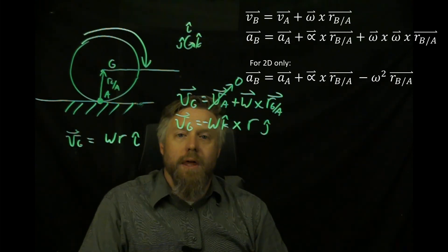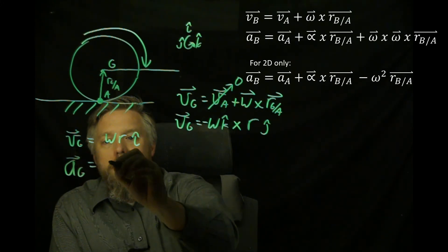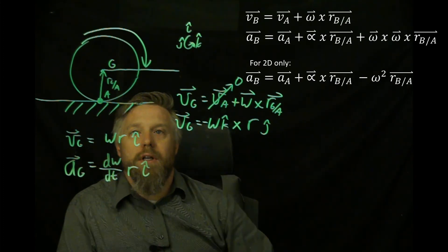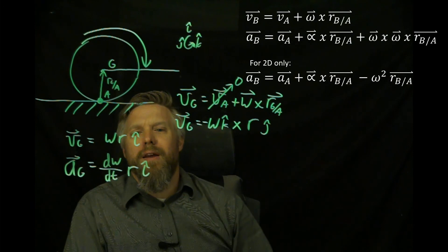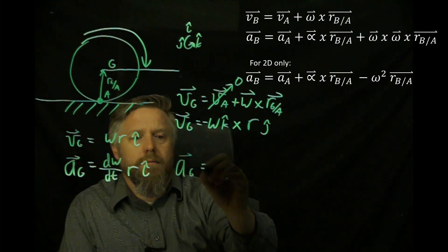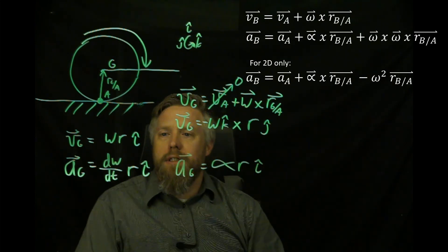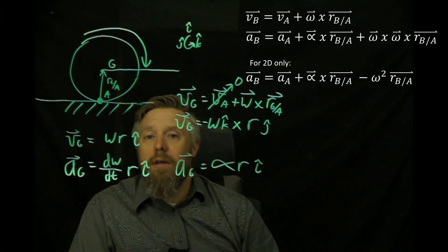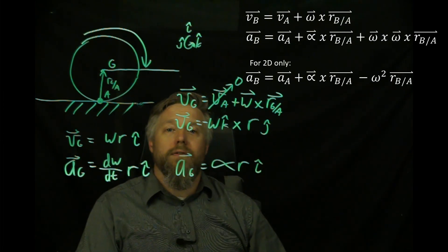When we take the derivative of that equation, we get the acceleration of the center. It's going to be d(omega)/dt times r — r is not changing because it's the radius of the disk — and that point is accelerating along a straight line. This equals alpha r times i. The scalar versions are simply v equals omega r and a equals alpha r. Considering the center point can be a good start to your problems if you have a rolling disk. Hopefully that's helpful — let me know if you have any questions.